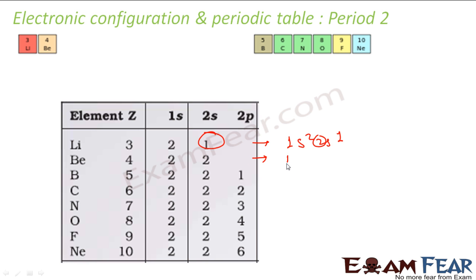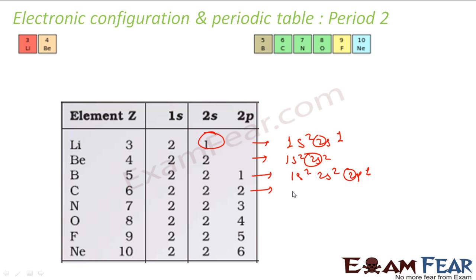For beryllium, atomic number is 4, so the configuration is 1s2, 2s2 — maximum value of n is 2. For boron, it is 1s2, 2s2, 2p1 — maximum value of n is 2. For carbon, it is 1s2, 2s2, 2p2 — maximum value of n is 2. For nitrogen, it is 1s2, 2s2, 2p3 — here also maximum value of n is 2.